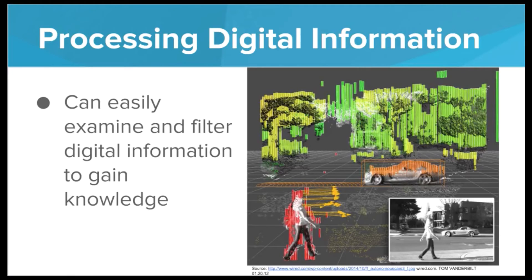We can also use computers to examine and filter digital information to gain knowledge. Here we have a picture of what a self-driving car sees. The self-driving car uses cameras, radars, and several different types of measuring devices to input information from the physical world. Once that is encoded as digital information, it can use software and programs to actually predict things about the outside world — it can locate obstacles, predict where other cars and people are headed.